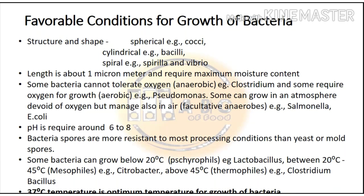Now, the favorable conditions for growth of bacteria: their structure can be spherical, cylindrical, or spiral in shape. Length is about one micrometer and they require maximum moisture content. Some bacteria cannot tolerate oxygen — known as anaerobic — for example, Clostridium. Some require oxygen for growth — known as aerobic bacteria — for example, Pseudomonas. Some can grow in the absence of oxygen but also manage in air — for example, Salmonella and E. coli. The pH required is around 6 to 8.